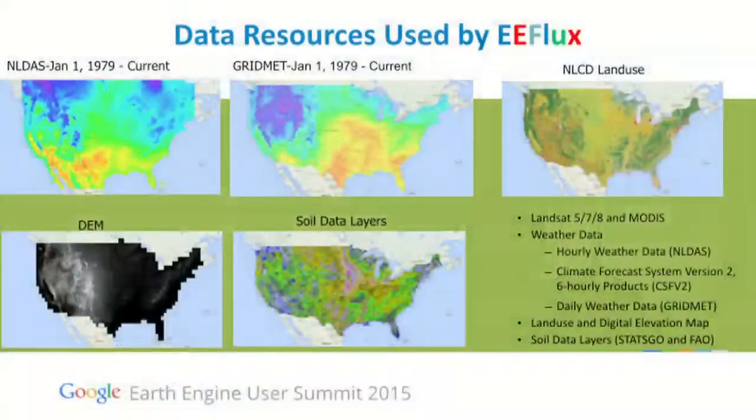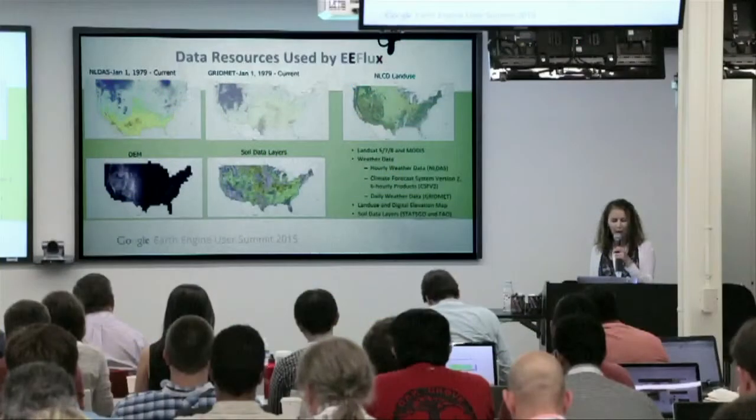That is why Landsat is very important. ET is used as a residual in the land surface energy balance model. There are a number of data resources that EFLUX uses, including hourly NLDAS to calibrate the land surface. The original is the METRIC model. We use gridMET bias-corrected with PRISM, NLCD, and soil data layers.